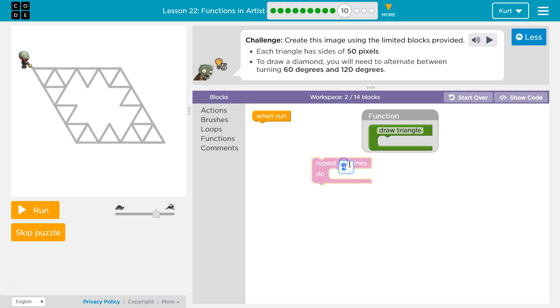But a square has four sides. Triangles obviously have three. So, repeat three times. 50 pixels. Okay. Move forward. And not 100. 50.